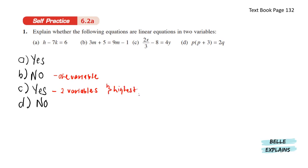For the next one, let's expand the brackets first. We get p squared plus 3p equals 2q. It is not a linear equation since the highest power is 2.